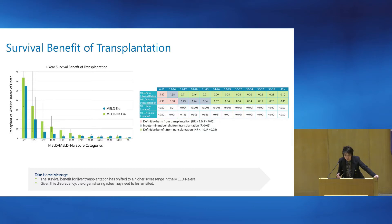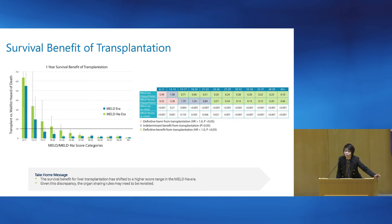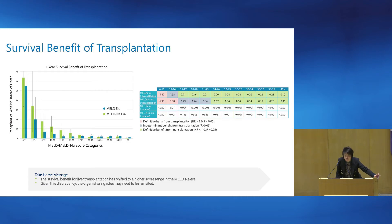When evaluating survival benefit of transplant, remember that survival benefit compares the hazard of dying of those who received the transplant compared to somebody on the wait list with a similar MELD score who did not receive a transplant. If your hazard ratio is over one, that means you do not receive a survival benefit from transplant. Looking at this graph, blue is the MELD era — you can see that roughly at MELD scores above 15, there is a survival benefit of transplant. When we evaluate this in the MELD sodium era in green, you don't see a significant survival benefit until MELD scores above roughly 21.